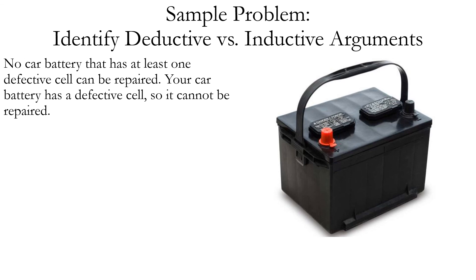Another example. No car battery that has at least one defective cell can be repaired. Your car battery has a defective cell, so it cannot be repaired. Is this deductive or inductive? This is a valid argument, so it must be deductive. If it's true that no car battery with at least one defective cell can be repaired, and your car battery has a defective cell, then it's necessarily true that your car battery cannot be repaired. Remember, not all deductive arguments are valid, but it is true that all valid arguments are deductive.